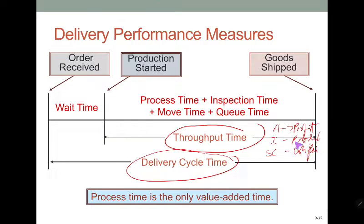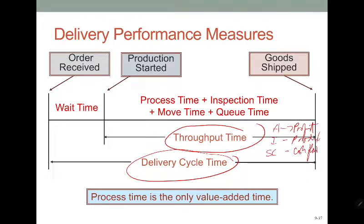Make sure you know the relationship between delivery cycle time and throughput time. The throughput time is the actual time taken for the product to be manufactured. The delivery cycle time is longer — it covers from when you order materials all the way until you sell the product. It is important to know the difference between these two.